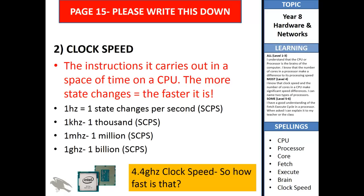On page 15, under the writing that you wrote before, add a new subtitle called 'Clock Speed'. The clock speed is the speed of the processor - the instructions it carries out in a space of time on a CPU.